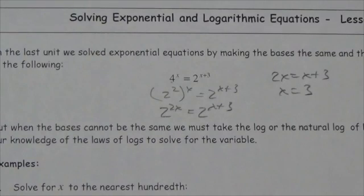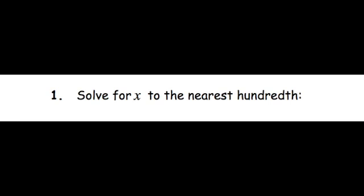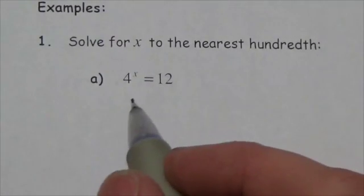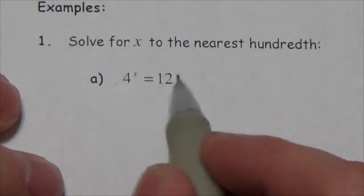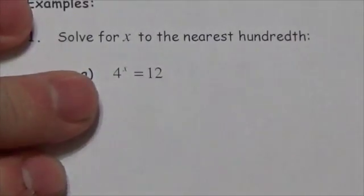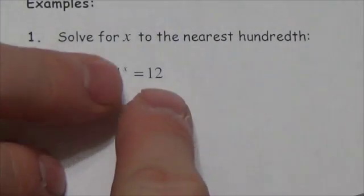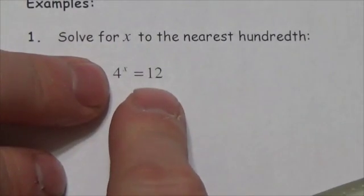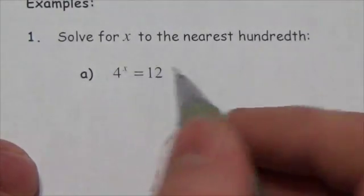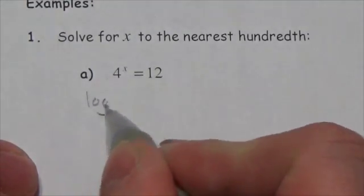Solve the following for x to the nearest hundredth: 4 to the x is equal to 12. So here we go — 4 to the power of x equals 12. There isn't a nice comparison between 4 and 12. 12 is not a power of 4. While 4 is a power of 2, 12 isn't, so 12 is really the oddball here. What we're going to do is take the log of both sides of the equation.